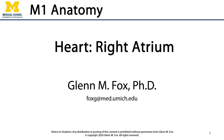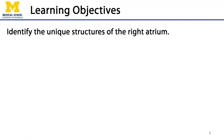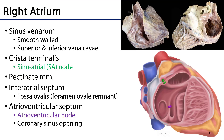Let's talk about the right atrium. In this video we'll discuss the unique structures of the right atrium. The right atrium, as you recall, is the recipient of all of the blood coming back from systemic circulation. So it's going to receive blood from the superior vena cava, the inferior vena cava, and the coronary sinus which is serving the heart.